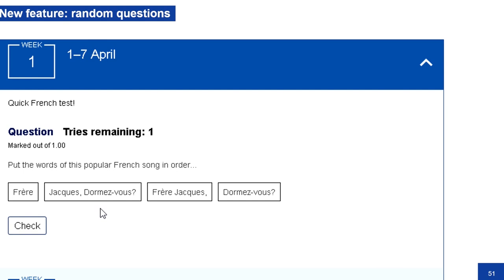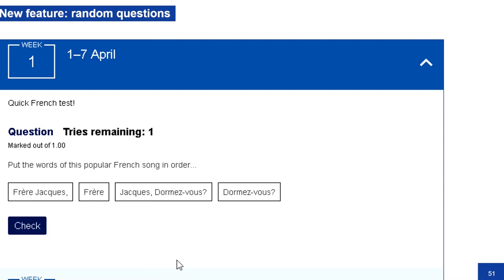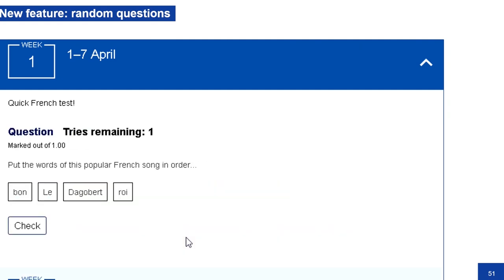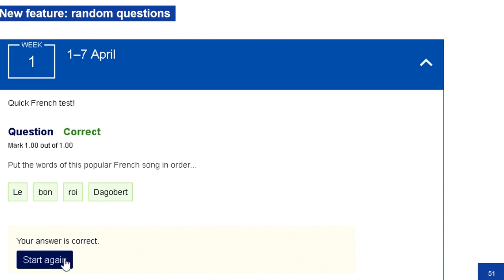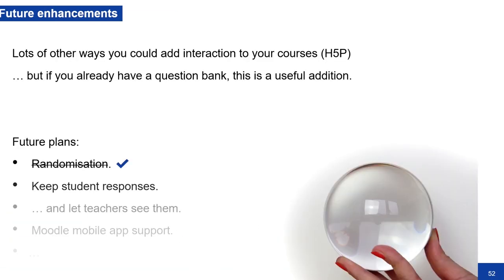At the moment, this is as simple as it could possibly be. We first made it work with single questions. The next addition is randomization: instead of embedding one specific question, you can embed a category and it will randomly select a question from that category. When you've done one question, you can say 'give me another' and move on to the next one. So randomization is ticked off the to-do list. The next thing is obviously if students are interacting with stuff, it'd be good if that was kept permanently so students could look back and teachers can see how their students are getting on. It currently doesn't do that, but it's top of our list of things to do next.